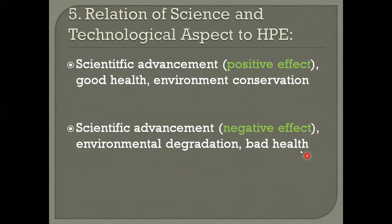Now the relation of the science and technological aspect: due to scientific advancement, there are different positive as well as negative effects on health, population, and environment. We can see advancements in the sectors of health, communication, education, and many other sectors. In the health sector, positive effects include different types of machinery like X-ray machines and CT scan machines.